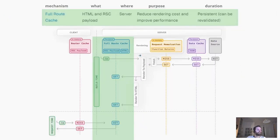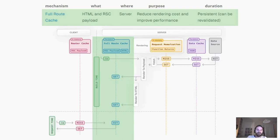Let's start with the first mechanism: the full route cache. Next.js streamlines the process by automatically rendering and caching routes during build time. The full route cache is built during build time. This optimization ensures that cached routes are served, eliminating the need to render on the server for every request, and consequently leading to quicker page loads. To grasp this mechanism, it's beneficial to delve into React's rendering mechanism and discover how Next.js efficiently caches the outcomes.